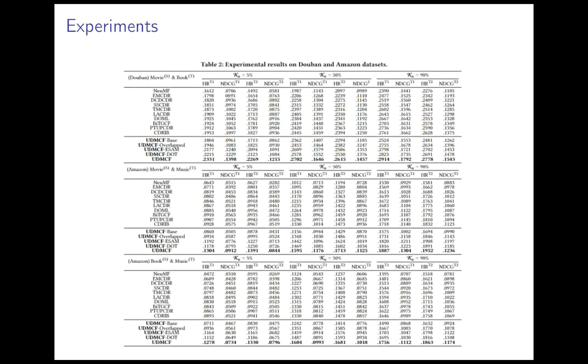We conducted extensive experiments on two popularly used real-world datasets, Douban and Amazon. The Douban dataset has two domains: Movies and Books. The Amazon dataset has three domains: Movies, Books, and Music.